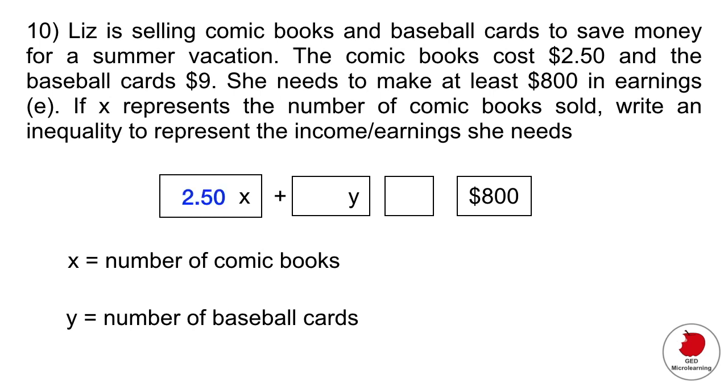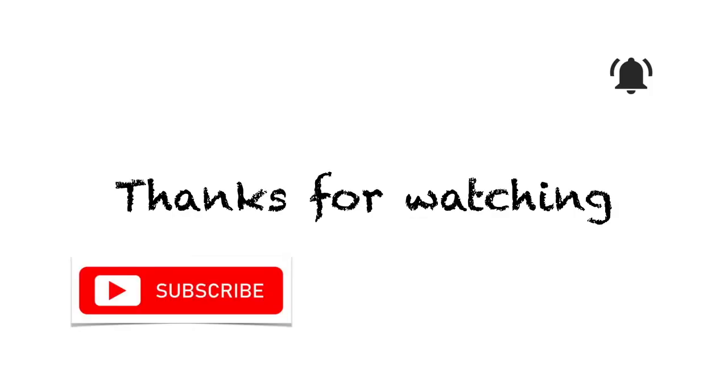What we're going to do is plug in the cost of each of these items. So $2.50 per comic book multiplied by the number of comic books, plus the cost of one baseball card $9 multiplied by y the number of baseball cards sold. And then it says she needs to make at least $800, so equal to $800 or more than $800. So that's the symbol that you would use. Okay folks, so that is it for today. I hope you found some value in this. If you did please consider subscribing. Have a terrific rest of your day and thank you so much again for your time, take care.